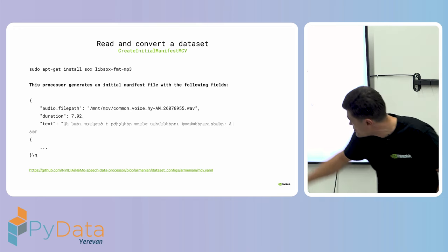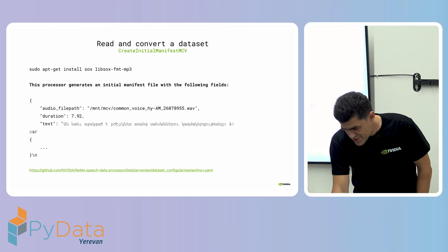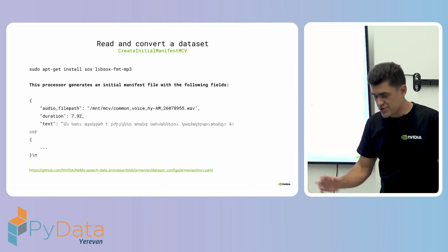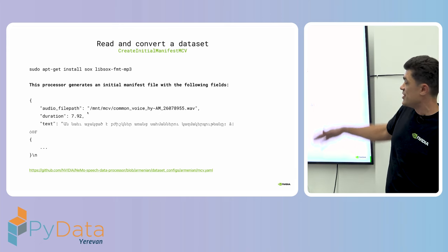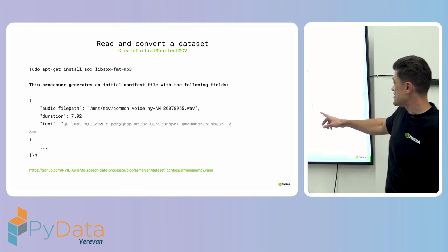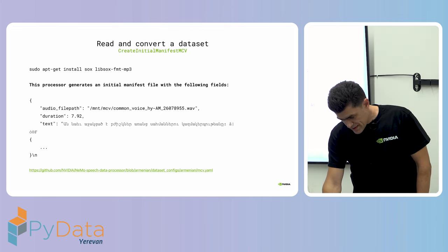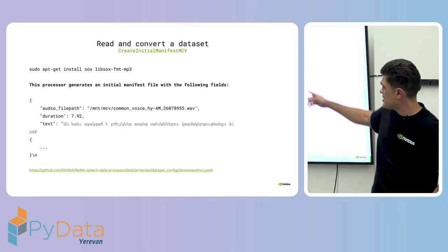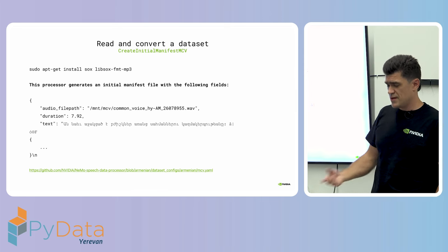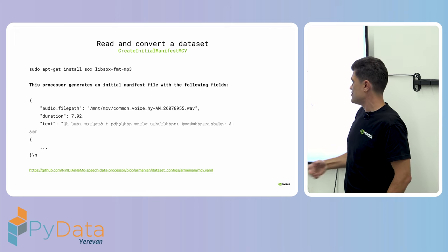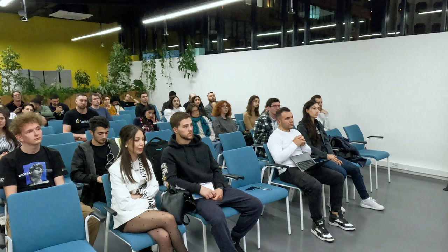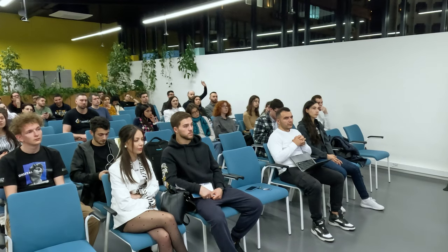Each entry is separated by a newline. The data is in JSON format with a key-value structure: you have the audio path, the duration of the audio, and the text from Mozilla Common Voice — then another JSON entry and so on. In Mozilla Common Voice they use the MP3 audio format, and to support it you just need to install some extra libraries for MP3 support. This is how the pipeline usually looks.